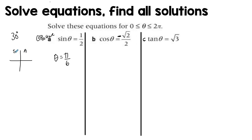Remember: All Students Take Calculus. Since sine is positive, I need to look at the first and the second quadrant. The calculator will automatically give me the closest quadrant it will get to when going anti-clockwise, which is the acute angle — that is, the first quadrant angle.